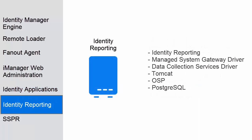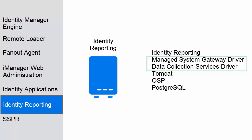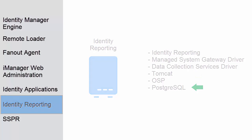Identity Reporting: this option installs components such as the reporting and data collection services. It deploys the Managed System Gateway driver and the data collection services driver. If you are installing Identity Reporting on a different server than Identity Applications, this option also installs the Tomcat service, the authentication service, and the PostgreSQL database.